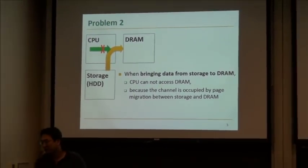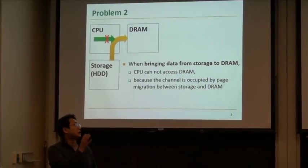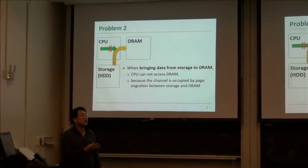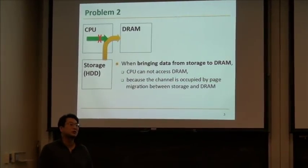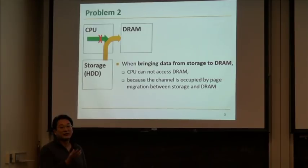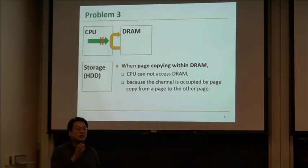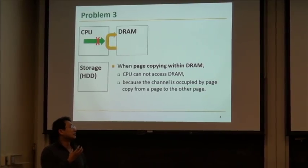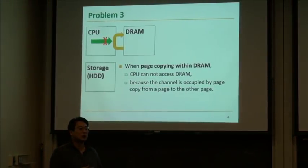The second problem is that if there is page migration from storage to DRAM or vice versa, the CPU cannot access DRAM itself because the channel is occupied by the page migration. Similarly, if there is a page copy within DRAM, we cannot access DRAM because the page migration operation consumes the whole bandwidth.